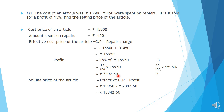Now the selling price of the article. The formula is SP equals effective CP plus profit: Rs. 15,950 plus Rs. 2392.50. Adding these two numbers gives Rs. 18,342.50. This is the selling price of the article.